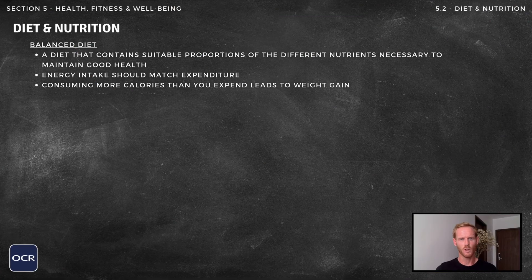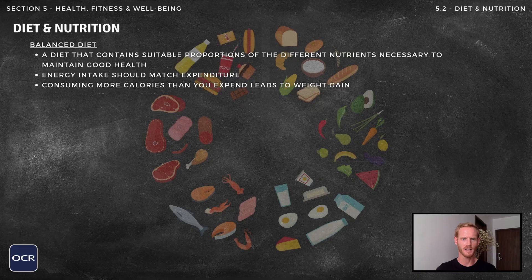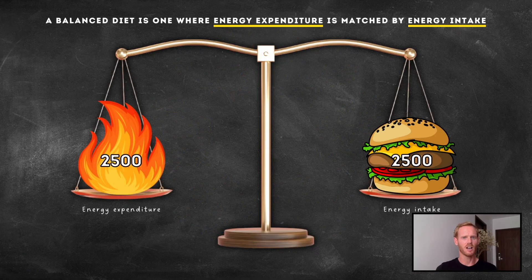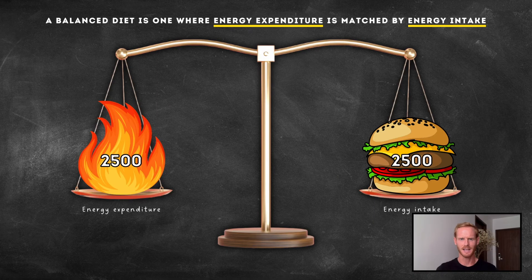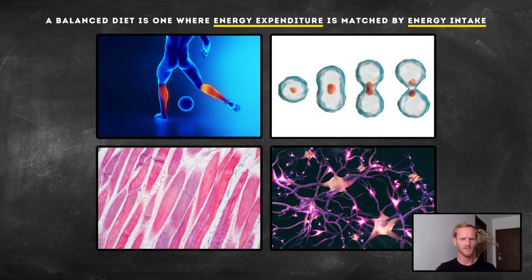A balanced diet is one that contains suitable proportions of carbohydrates, fats, proteins, vitamins, minerals and water necessary to maintain good health. The term balanced diet also refers to matching energy expenditure with energy intake, which allows a stable body weight to be maintained and ensures enough energy is available for exercise, growth, repair and a wide range of other bodily processes.